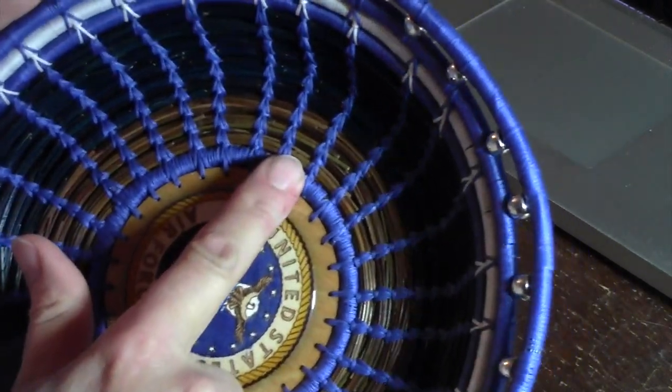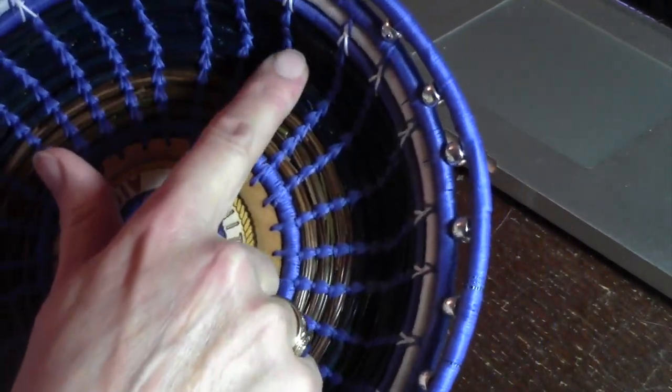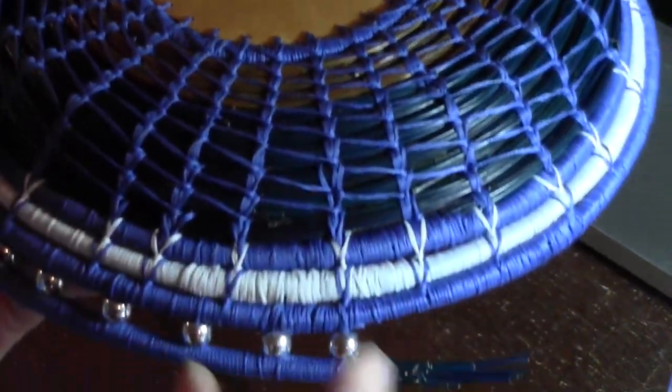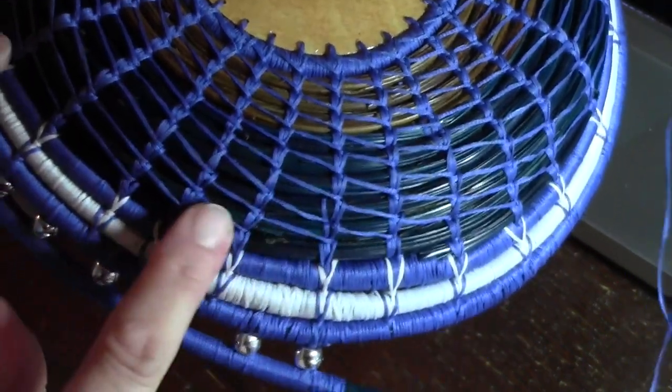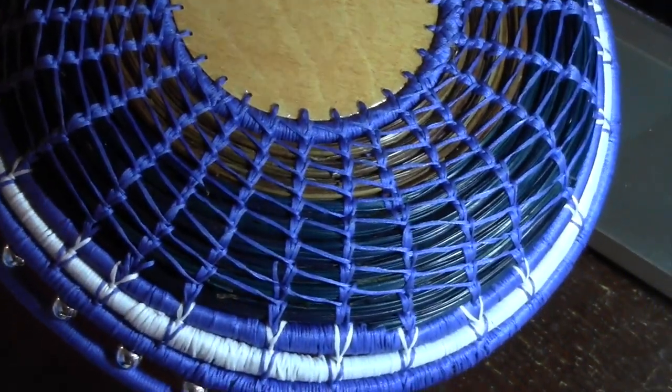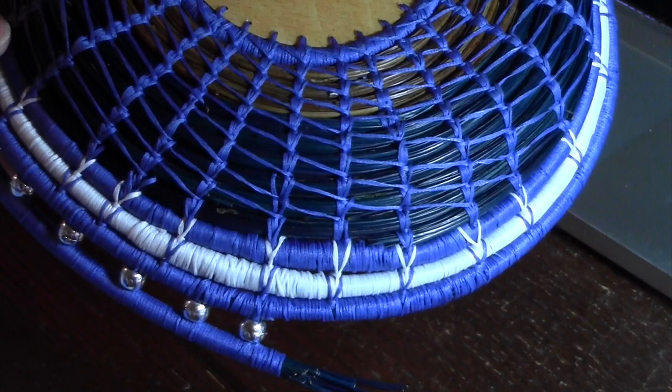One is the tie stitch. The tie stitch, these stitches are straight on the top but on the back they have this diagonal, they have these diagonal lines.